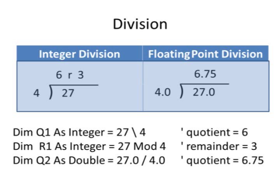The backslash is telling us that Visual Basic is going to be using an integer division. I'll also do a dim R1 for my remainder. Dim R1 as integer equals 27 mod 4.